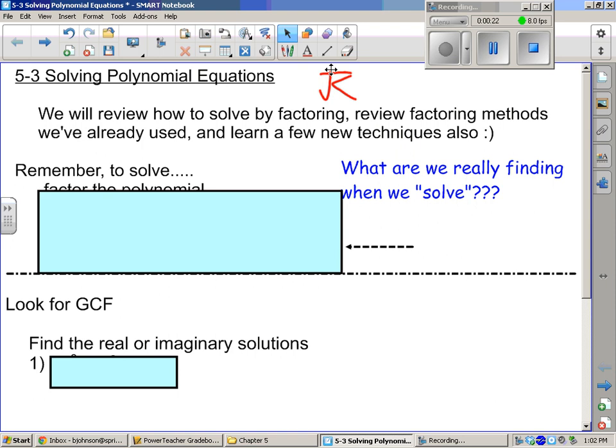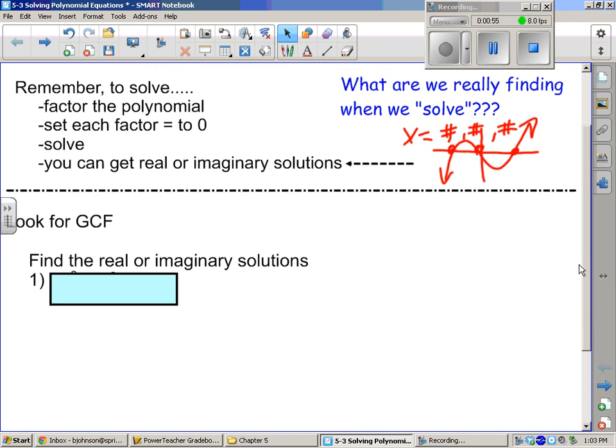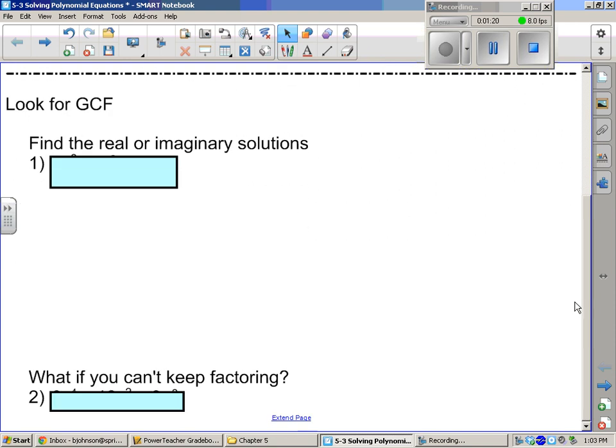Okay, we're going to review how to solve by factoring, some of the factoring methods we've already used, and learning a few new techniques. Now, what are we really finding when we solve? When you see the word solve, the points that cross the x-axis are the zeros, or we call them solutions, or we call them roots. The highest power is going to be how many answers there's going to be. You can get real or imaginary solutions. The imaginaries are when you have that negative under the radical. And that's going to come from quadratic formula.